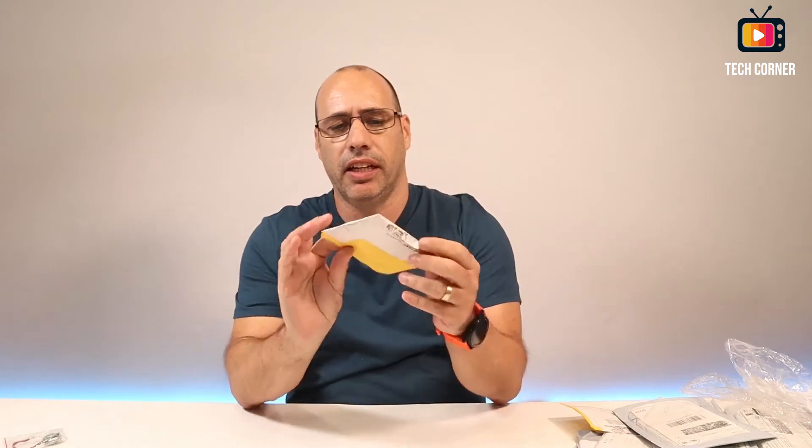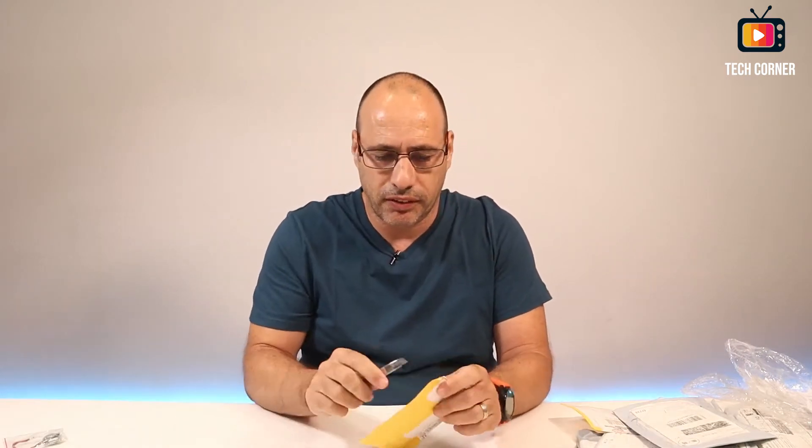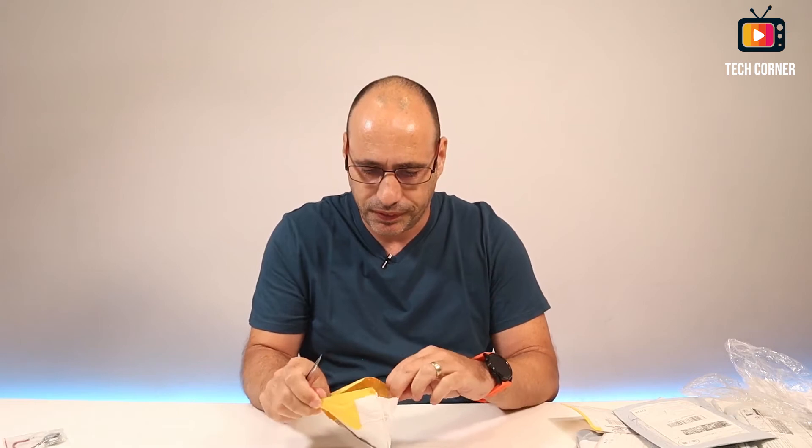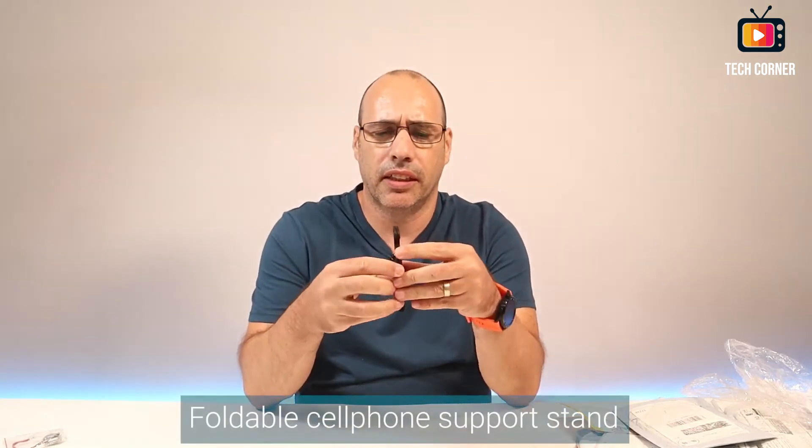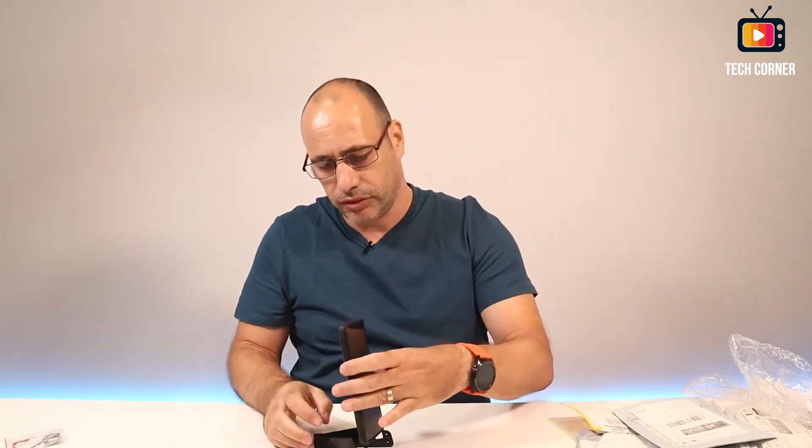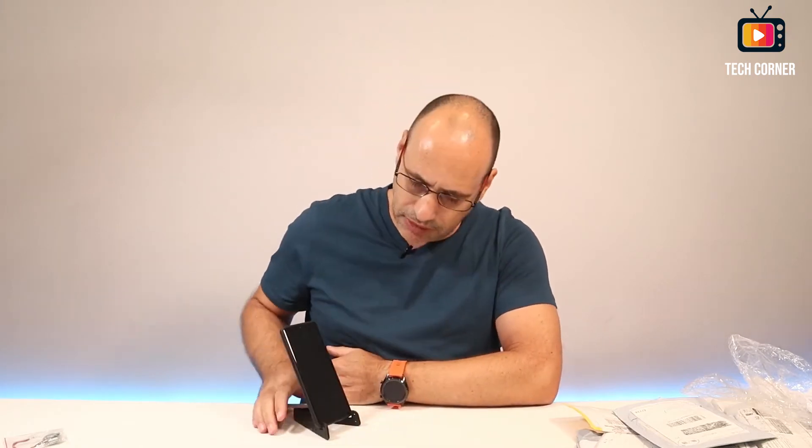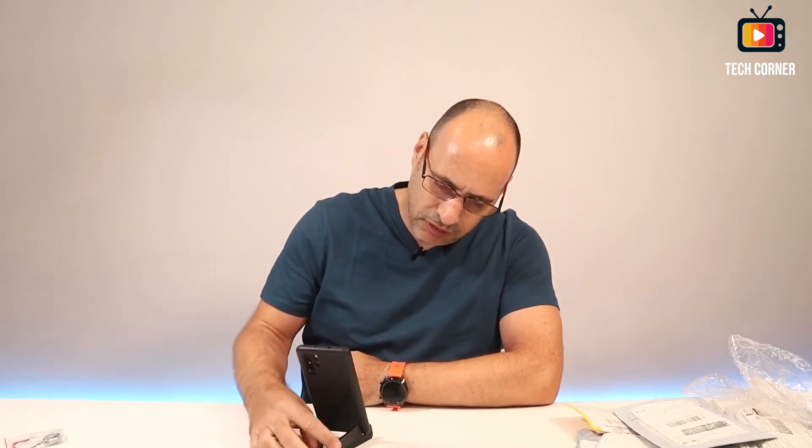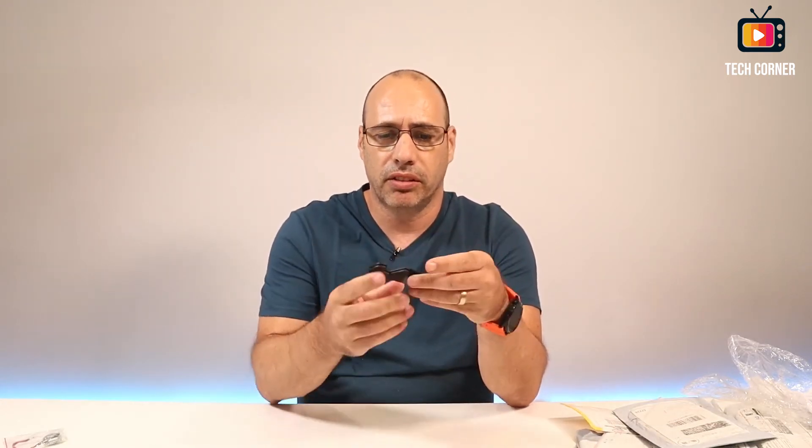So next one, we have this small one. Let's see what we have in here. Okay, nothing much. It's just a holder I bought for the recordings of the reviews I do with mobiles and stuff like that, so I can handle it. I can put it like this. It's black, it's not too shiny, so it's just an accessory for the reviews of the mobile phones and stuff like that.